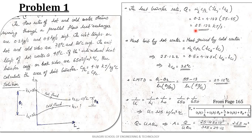The heat transfer rate is Mh·Cph·(Th1 − Th2): the mass flow rate of hot fluid is 0.2 kg/s, Cp is 4.18 kJ/kg·K, giving a heat transfer rate of 25.122 kJ/s (kilowatts). Equating this with Mc·Cpc·(Tc2 − Tc1), you can calculate Tc2, which is 32°C.